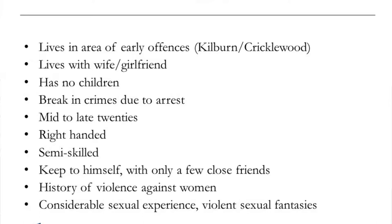Canter thought the individual was likely to be in his mid to late 20s, possibly in semi-skilled employment, and based on the crimes, a right-handed individual. He hypothesized the person would be quite socially removed, with one or two close friends but not very socially outgoing. There was also the belief the person would have a history of violence against women, and Canter believed the perpetrator would have had considerable sexual experience and quite entrenched violent sexual fantasies.